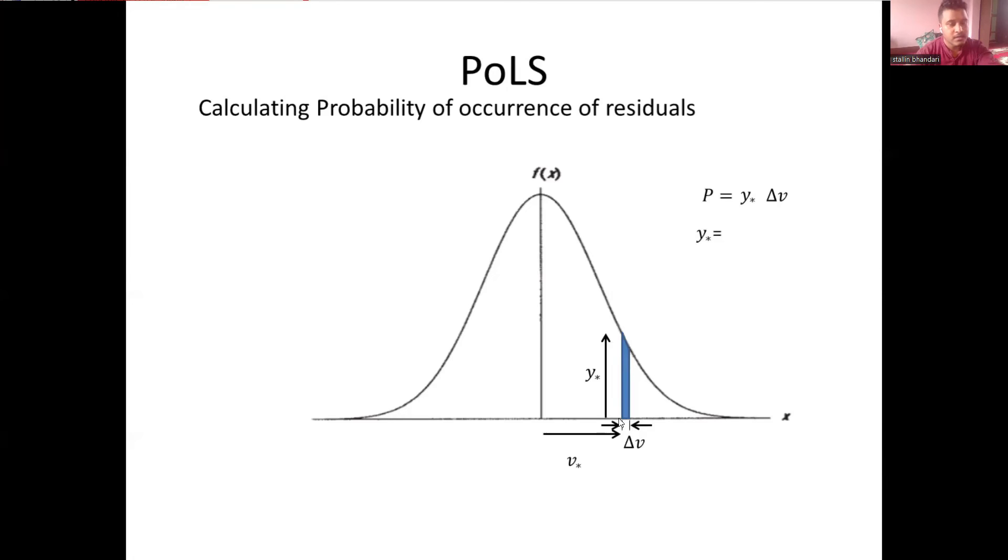The y* from the probability density function, the value can be calculated for y* as k e to the power negative h square v* square. As I've already shown in the previous slide.